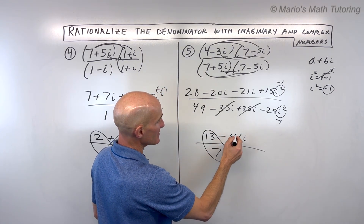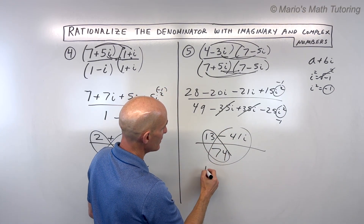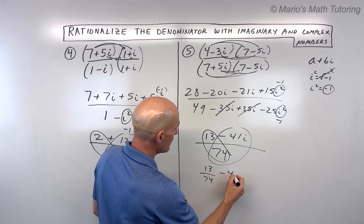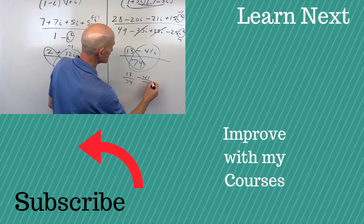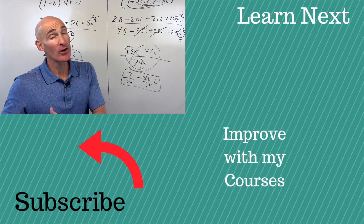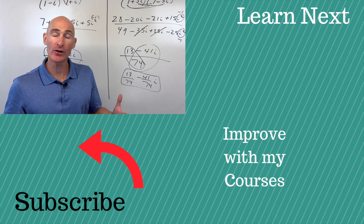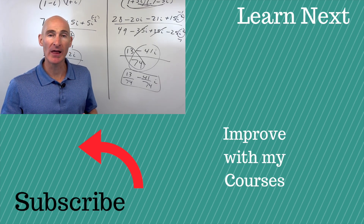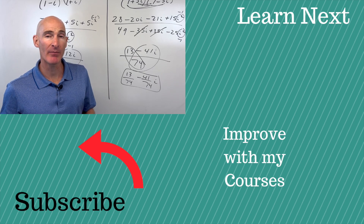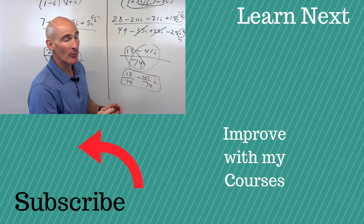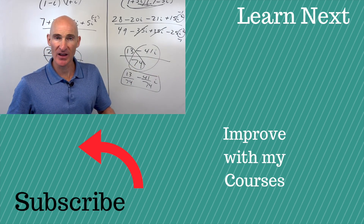Don't stop there — write it in the standard form of a complex number: 13 over 74 minus 41 over 74 i is our final result. Great job if you were able to follow these five examples. If you want to learn more about complex numbers, I've got a video that takes you through a lot of different types of problems — I'll put that video right there, follow me over and we'll get some more practice.